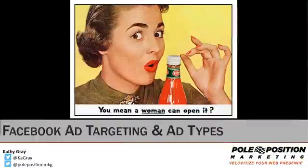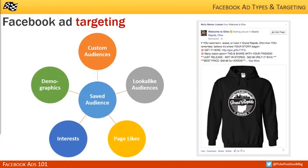Let's take a look at Facebook ad targeting options and ad types. The ad here is a great example of precise targeting. I grew up in the tiny village of Grand Rapids, Ohio — no one makes clothing for Grand Rapids, Ohio. They perfectly targeted this ad to Facebook users who had Grand Rapids, Ohio listed as their hometown. I didn't end up buying one, but I did share it with friends and family who also grew up in Grand Rapids.